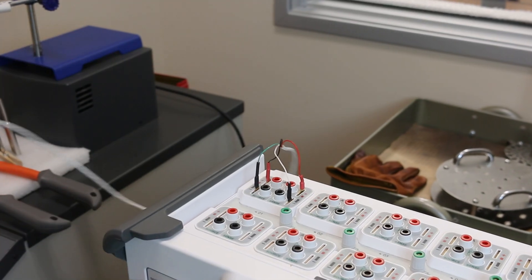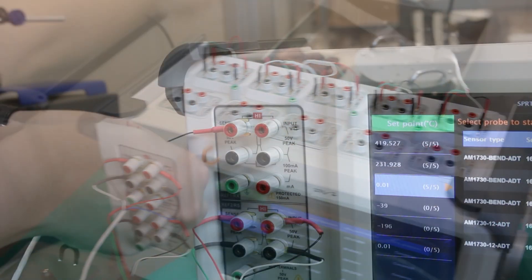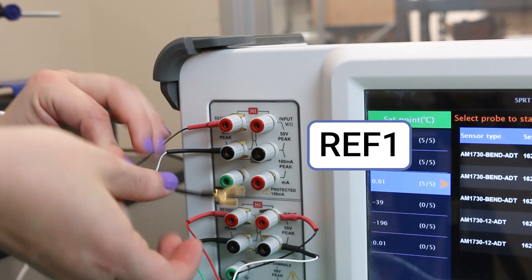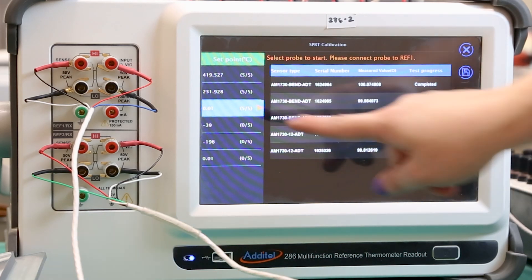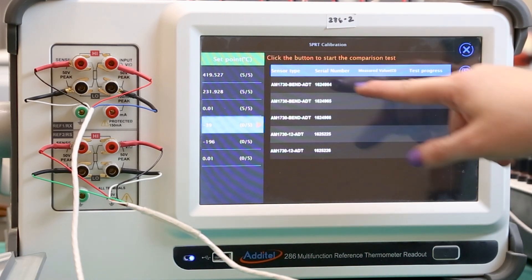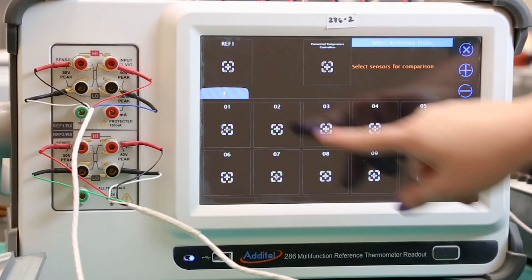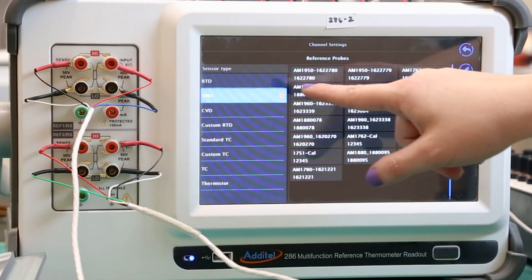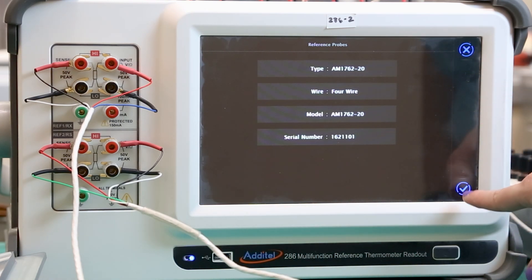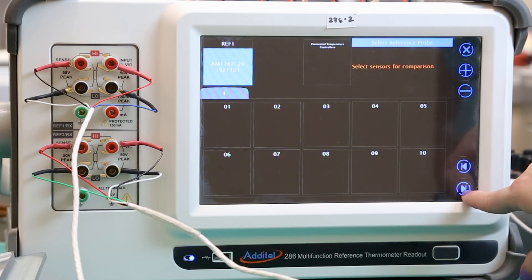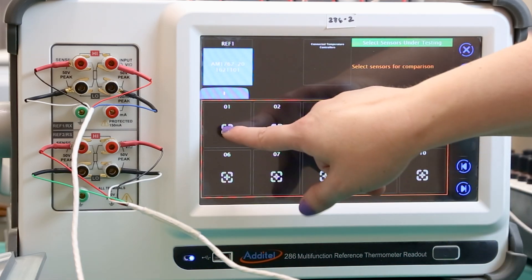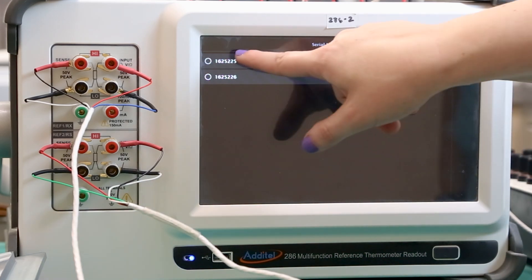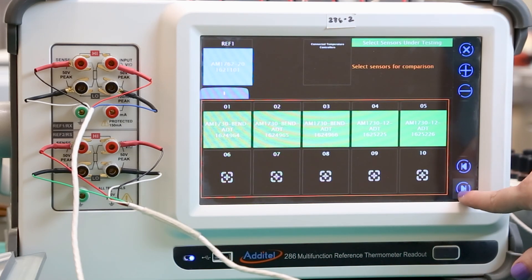Since the negative 39 degree bath is large enough to fit all of the probes at once, we can connect all five of them to the ports on the top of the 286. We will also connect the reference SPRT to the REF1 channel on the front of the 286. Now we can add each of the probes for the automated measurement. Select the first probe section, then add the reference SPRT from a list of preset probes. Then press the next button and add each probe to be measured to the corresponding channels they're connected to.